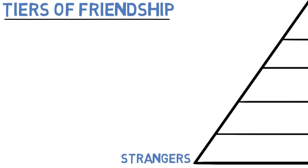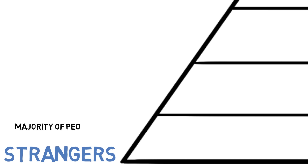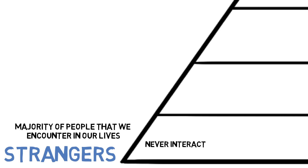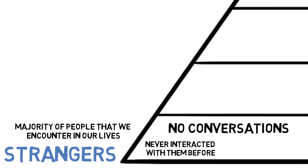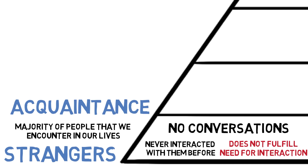The first tier is the stranger. Strangers make up the majority of people that we encounter in our lives. You may have seen them passing by during your commute to work, in front of you in the supermarket, or it might even be someone that you happen to share some classes with. What makes someone a stranger is the fact that you've never really interacted with them before. You might have exchanged glances, you might know their name, but you've never had a conversation with them. Both of you may acknowledge each other's existence, but that's about it. Strangers do not fulfill our need for human interaction at all.